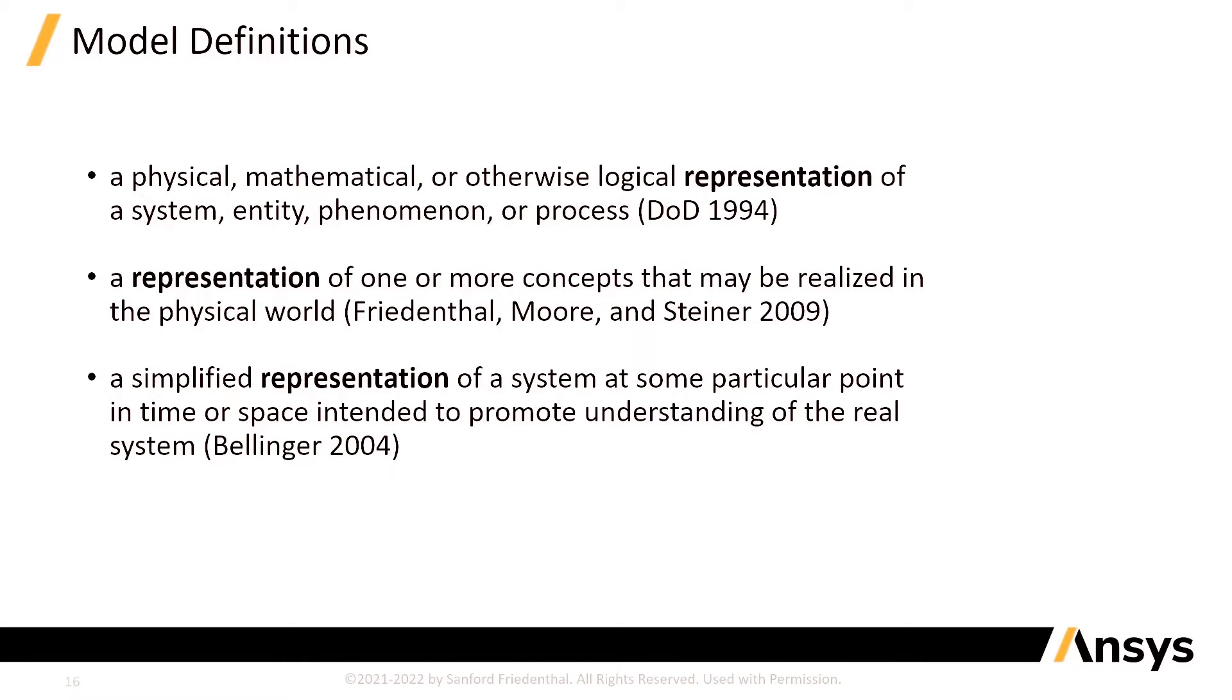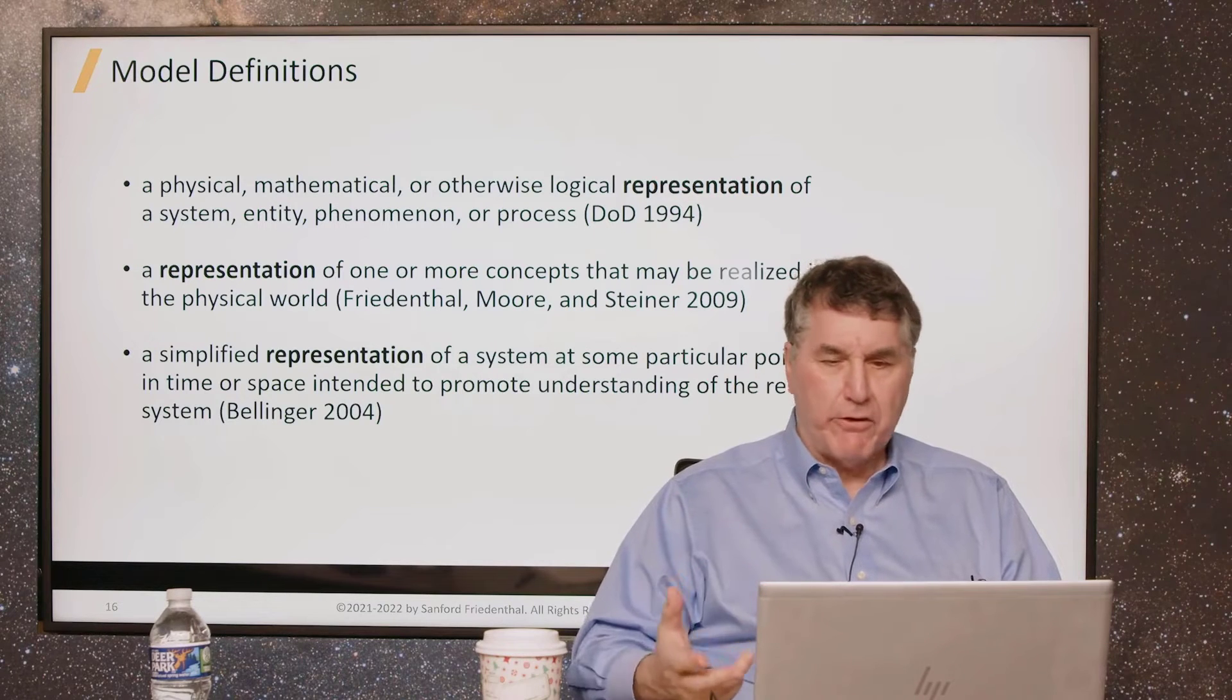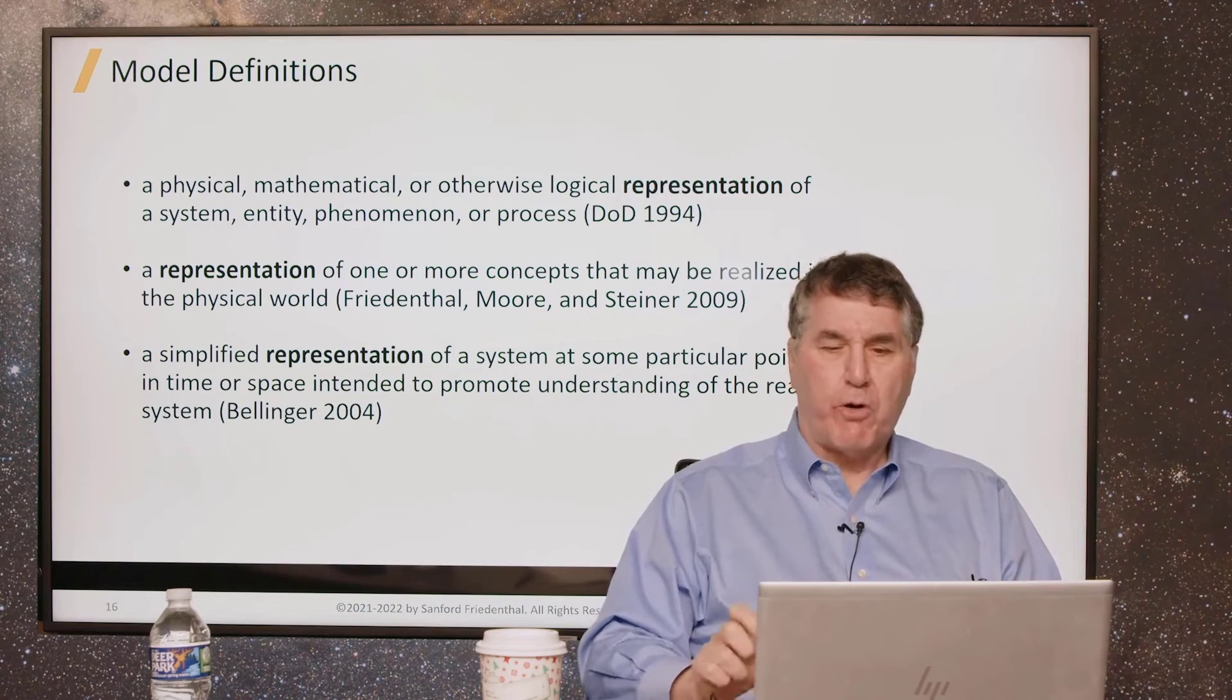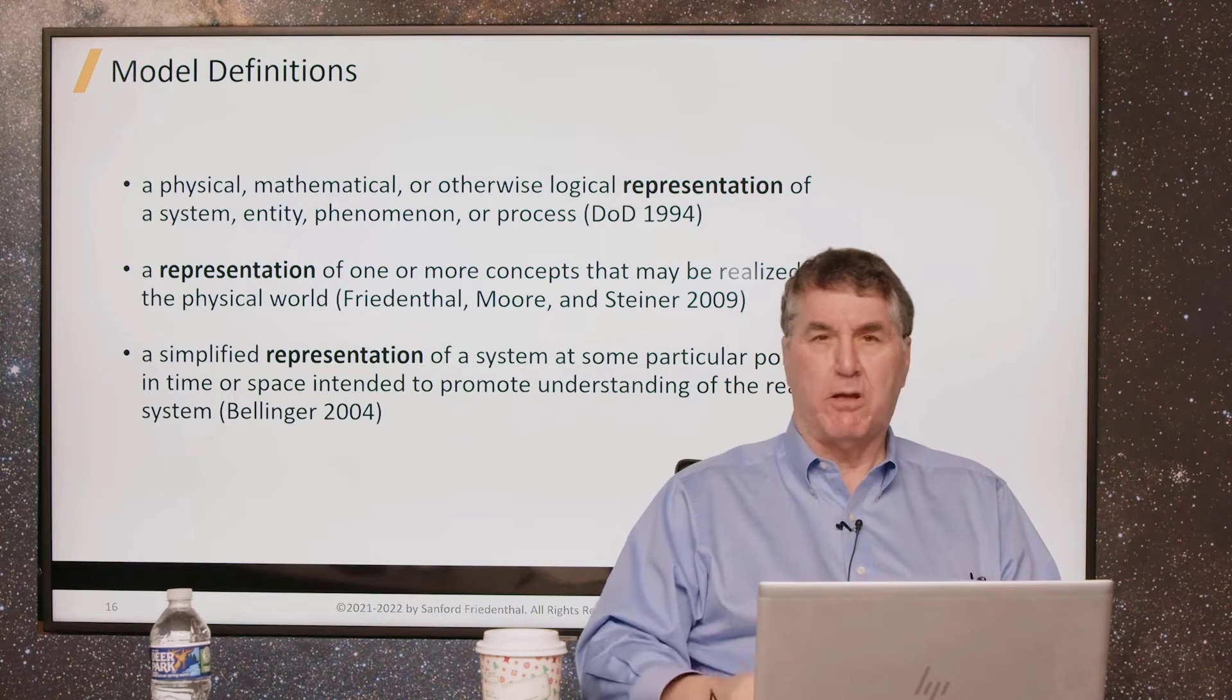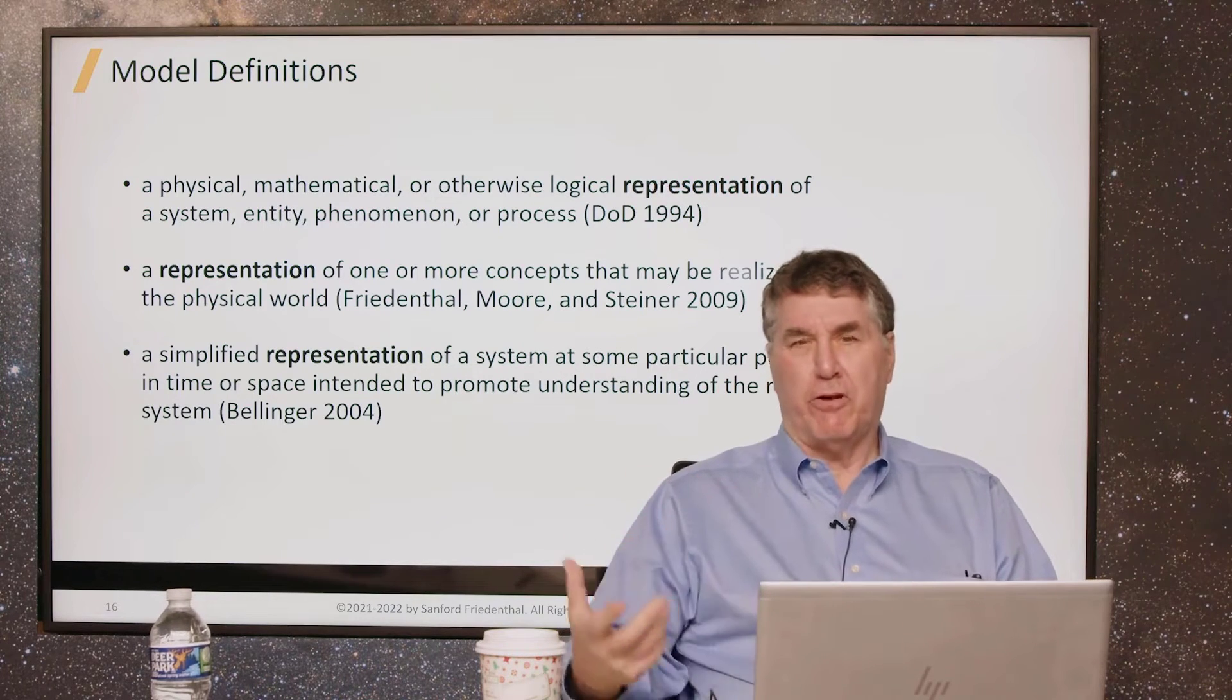There's a couple other definitions here. Next one: a representation of one or more concepts that may be realized in the physical world, or a simplified representation of a system at some particular point in time or space intended to promote understanding of the real system. There are many other definitions, but what you see in common with these three definitions, as well as the many other definitions, is that term representation. I think that's at the heart of model. A model is a representation of a thing.